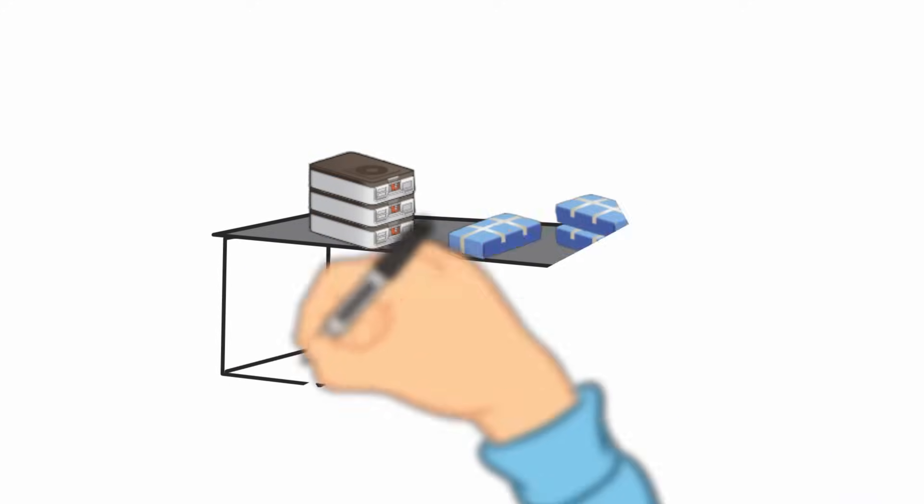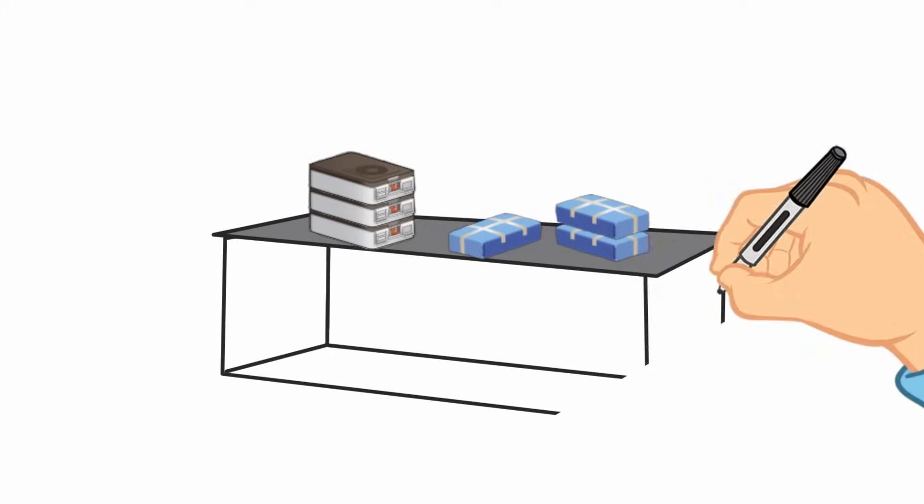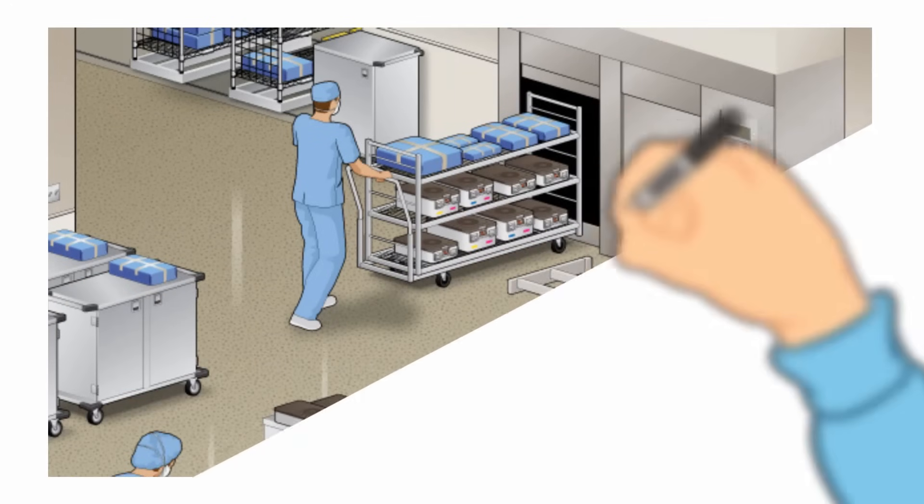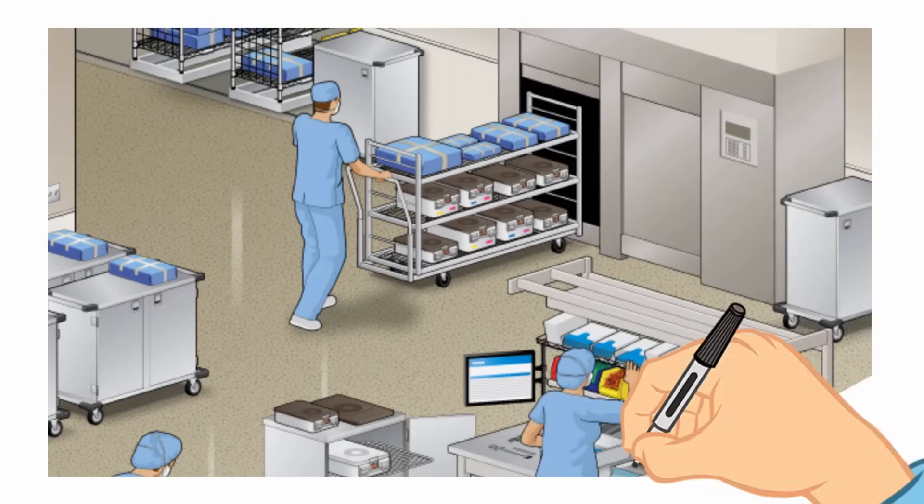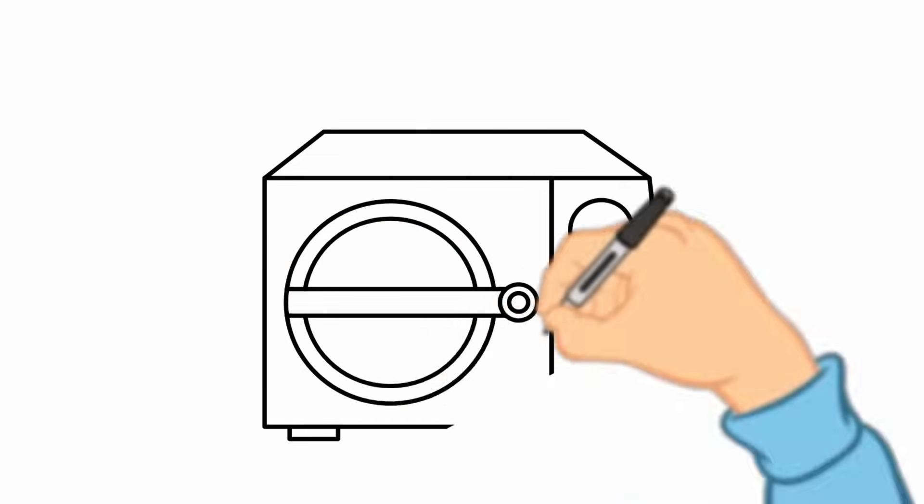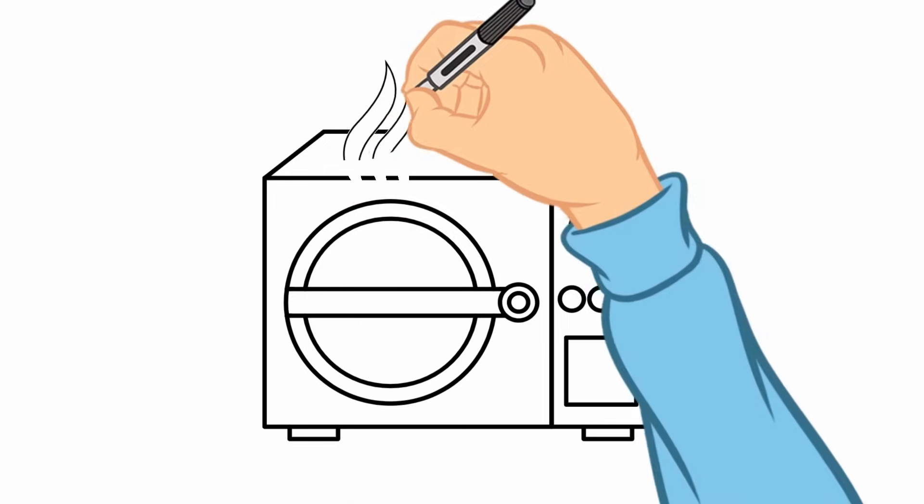As those trays build up, it comes time to build a sterilizer load with all the trays on appropriate sterilizer carts or shelves. Ensuring proper placement and detailed load stickers is incredibly important to track sterilization data, keeping patients safe. Sterilizers come in many different forms, whether it is a chemical-based sterilant or the most common system, which is pressurized steam.